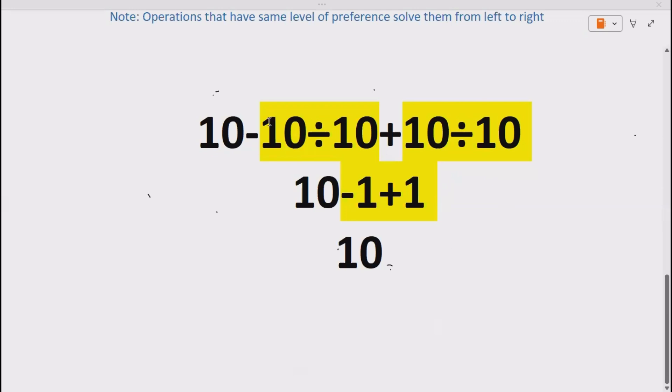Okay, so here we have division. So, 10 divided by 10 gives us 1. Here we have division. 10 divided by 10 gives us 1.